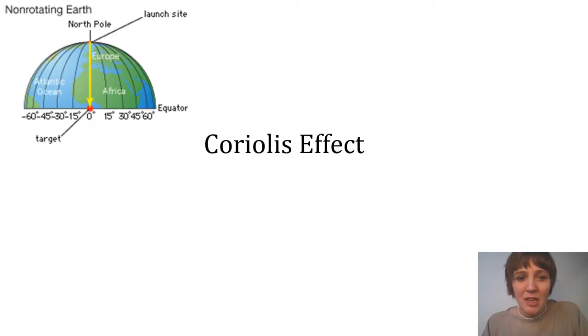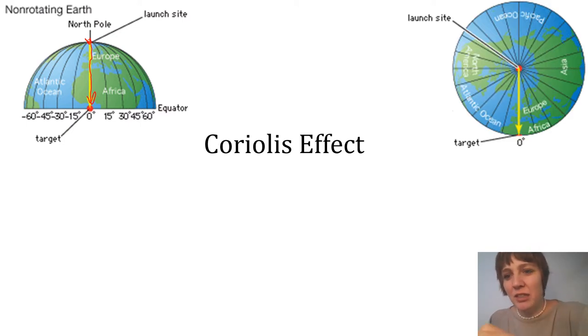For example, let's consider a missile launched from the North Pole to the equator. The top image shows what would happen if the earth was not rotating from two different vantage points. First here, shooting from the North Pole straight to the equator, and second over here in this image, this is the North Pole, and that should be a straight shot to the equator.